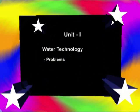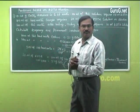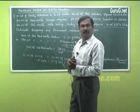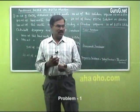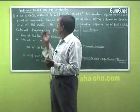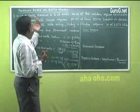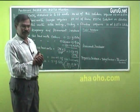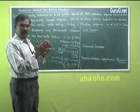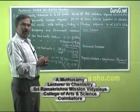In this segment, let us see some problems based on EDTA titration, that is to determine the total, temporary, and permanent hardness. In this problem, 0.28 gram of calcium carbonate is dissolved in 1 liter of water, giving you a standard hard water.